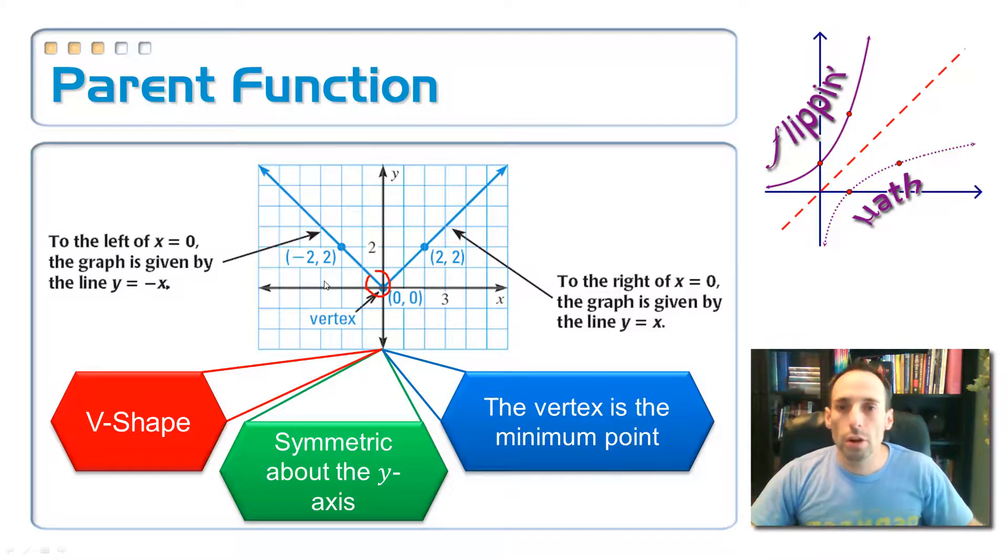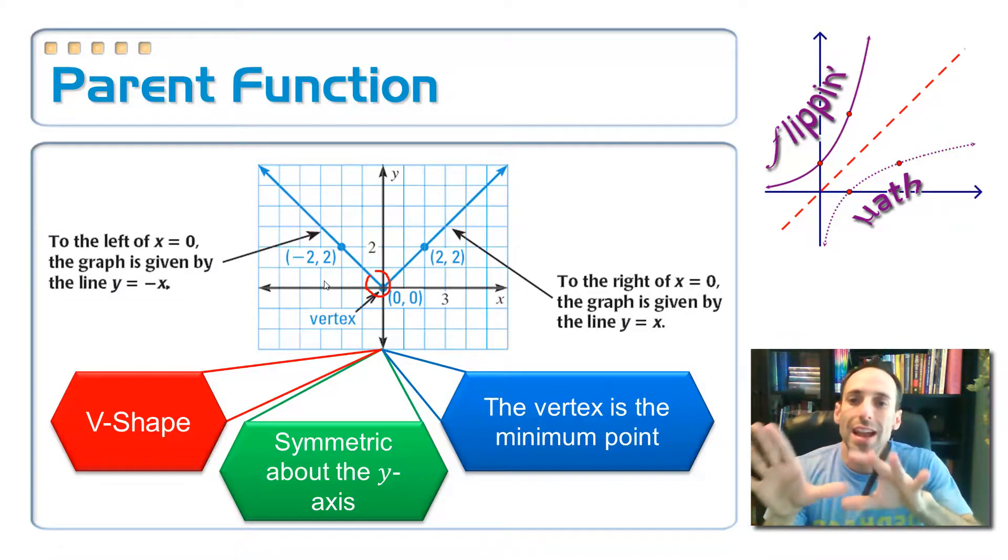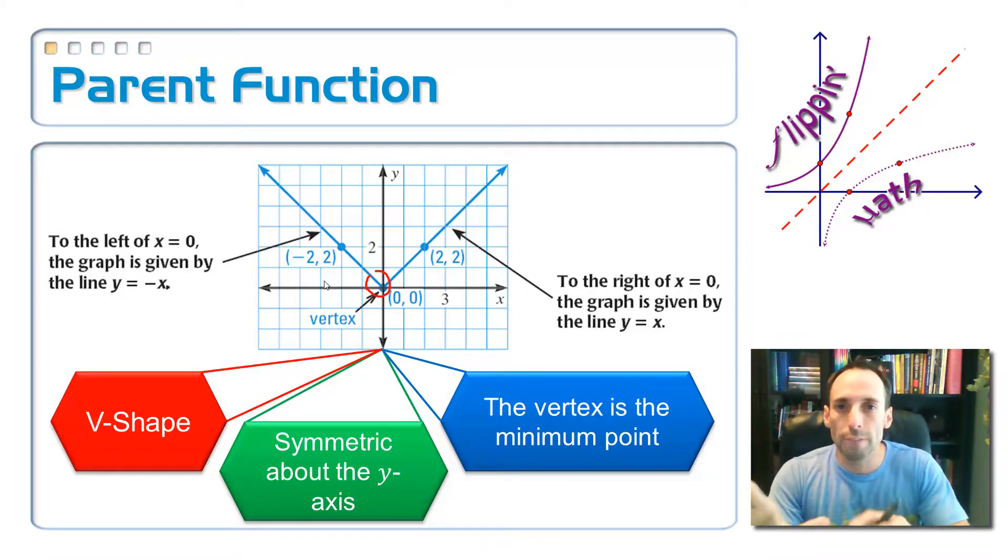So that finishes up this part. And now what we're going to do is we're going to take that general shape right there, that parent function shape, and we're going to do some transformations on it. We're going to stretch it. We're going to translate it. And we're going to reflect it.